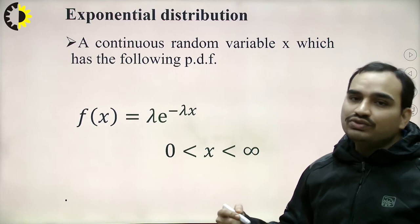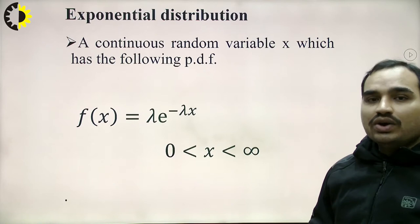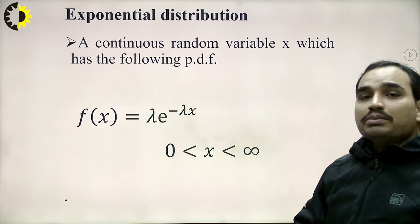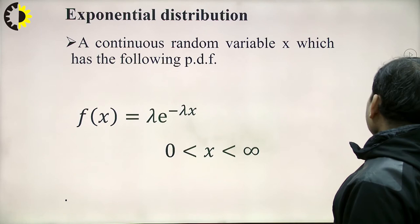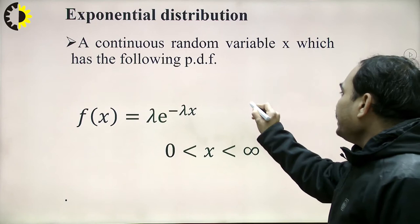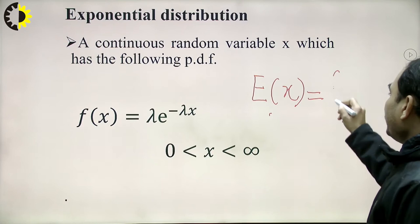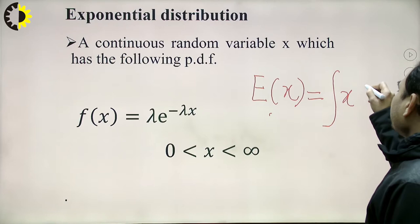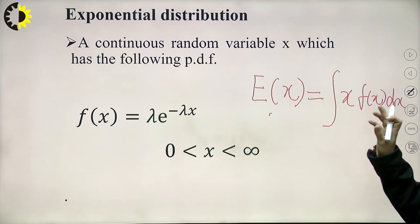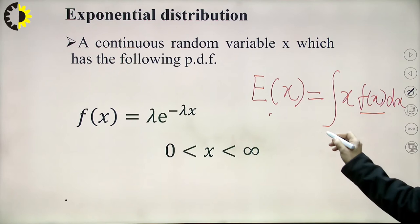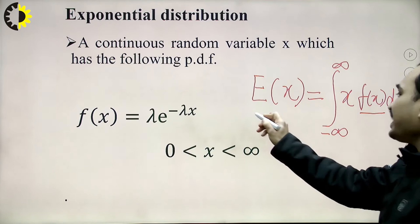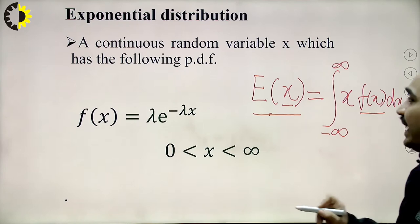Now let us define the mean of the exponential distribution function. The mean can be calculated for any PDF in terms of expectation: E[X] = ∫ x·f(x) dx, where the limit is from minus infinity to infinity. We can simply calculate the mean with the help of the expectation of x where x is a random variable.